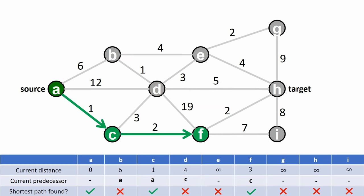As before, we now look at all neighbors of F. For vertex D we already know a path of length 4. If we go to vertex D via the shortest path to F, the distance would increase to 3 plus 19 equals 22. For this reason we do not update vertex D, but only the other neighbors H and I.